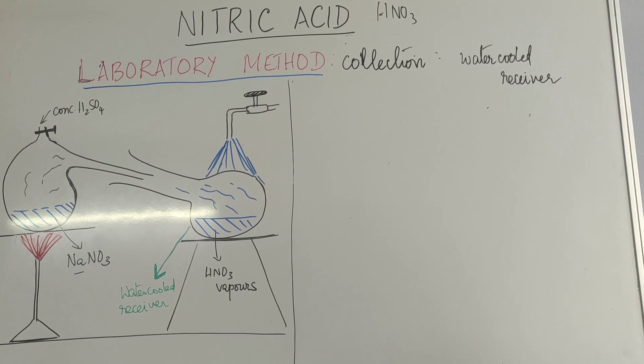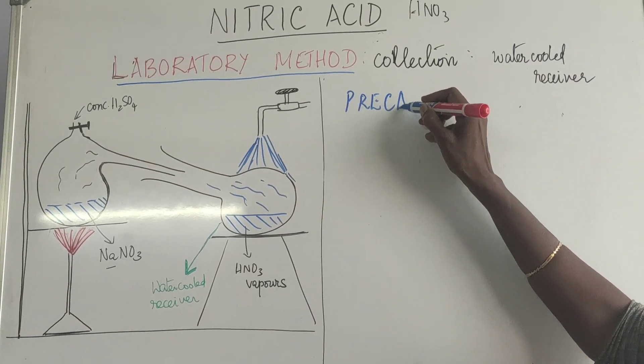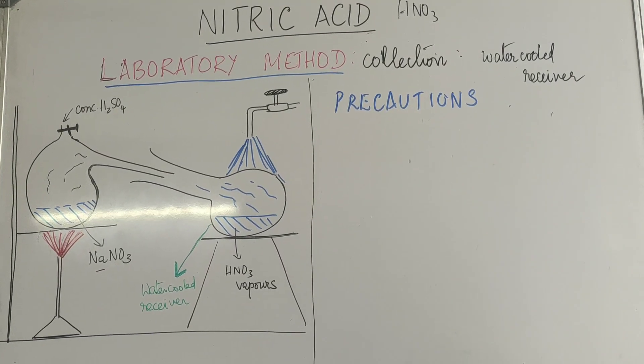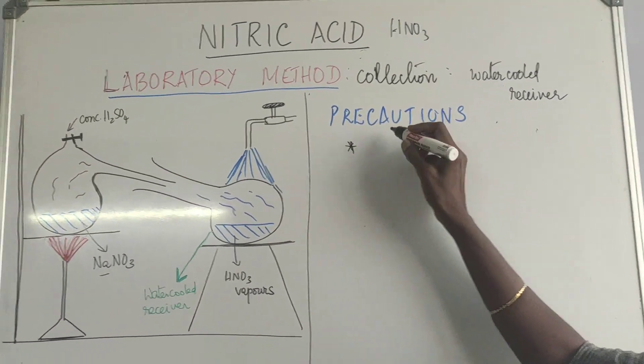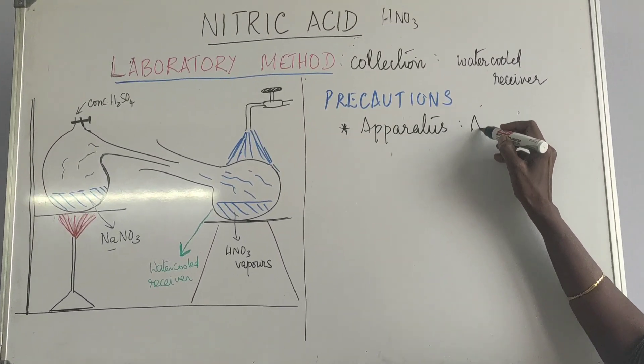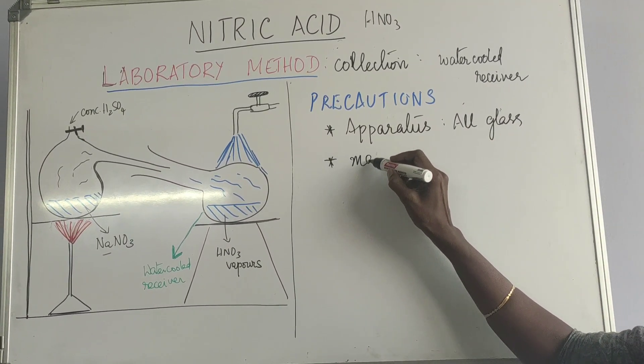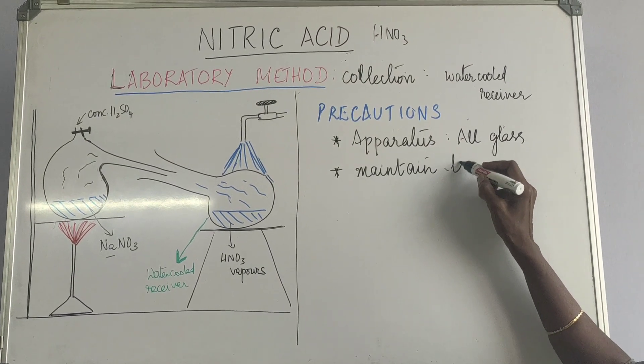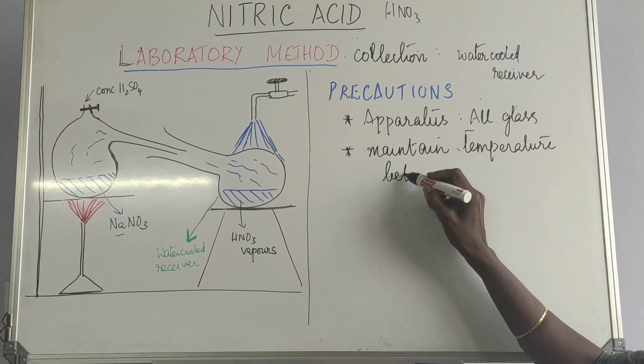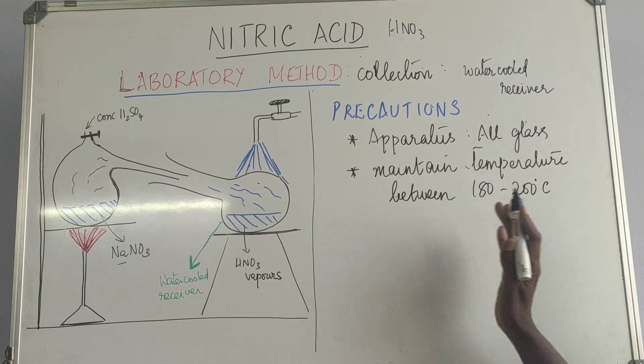Next we go to the important thing that is the precautions that we need to take. The first precaution that we need to take is, apparatus should be all glass. The second one that we need to take is, maintain the temperature between 180 to 200 degrees. So it should be below 200 degrees.